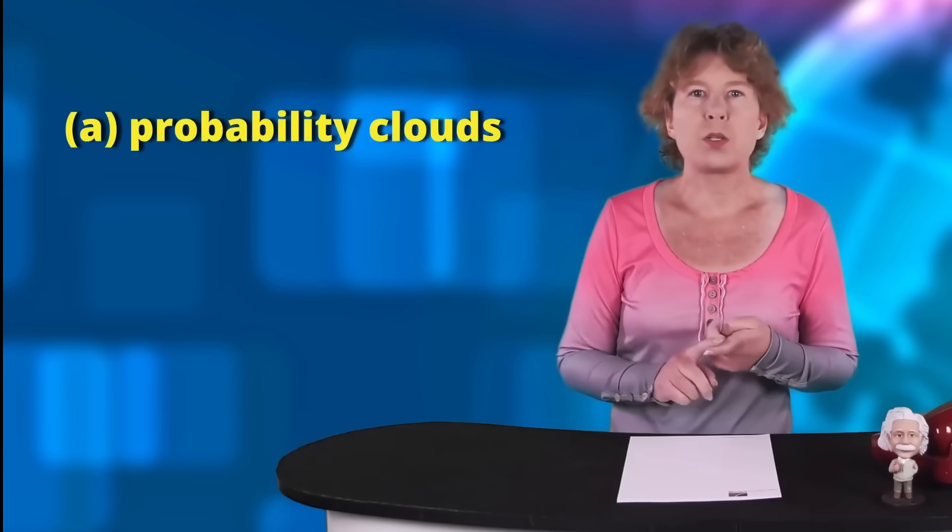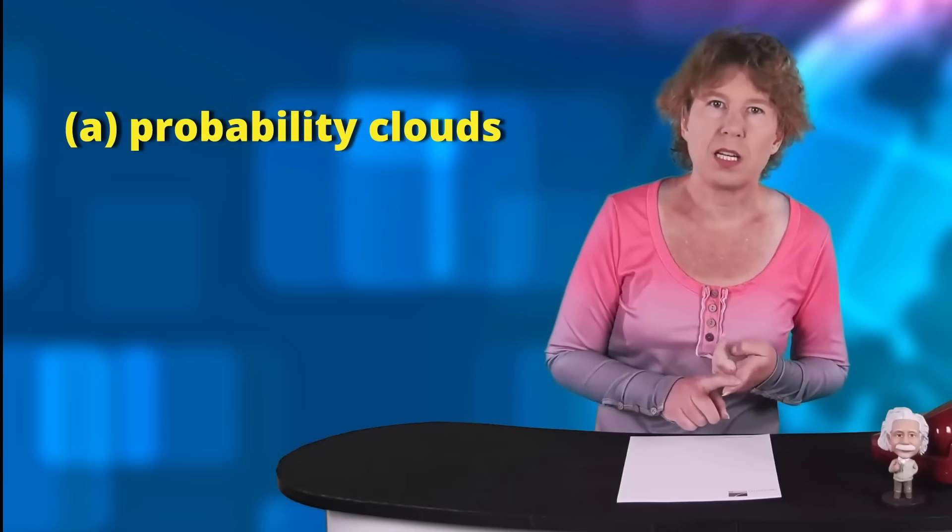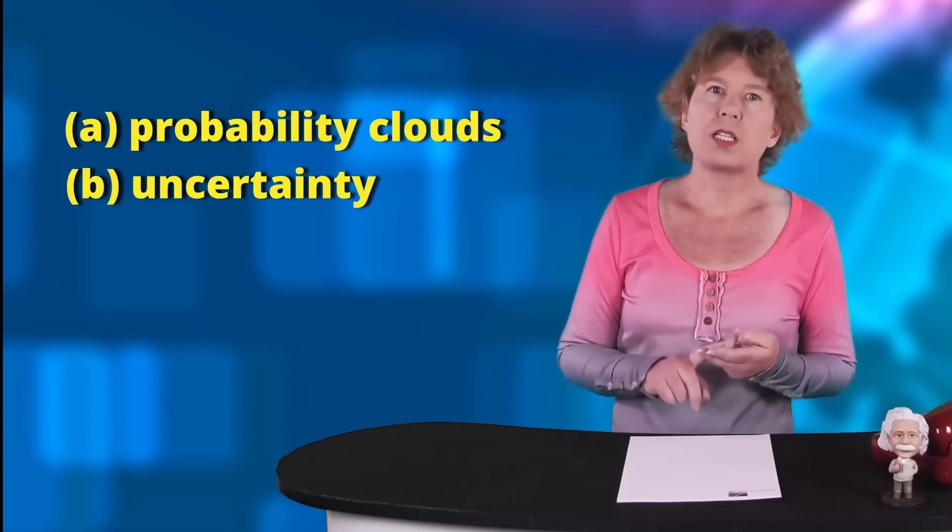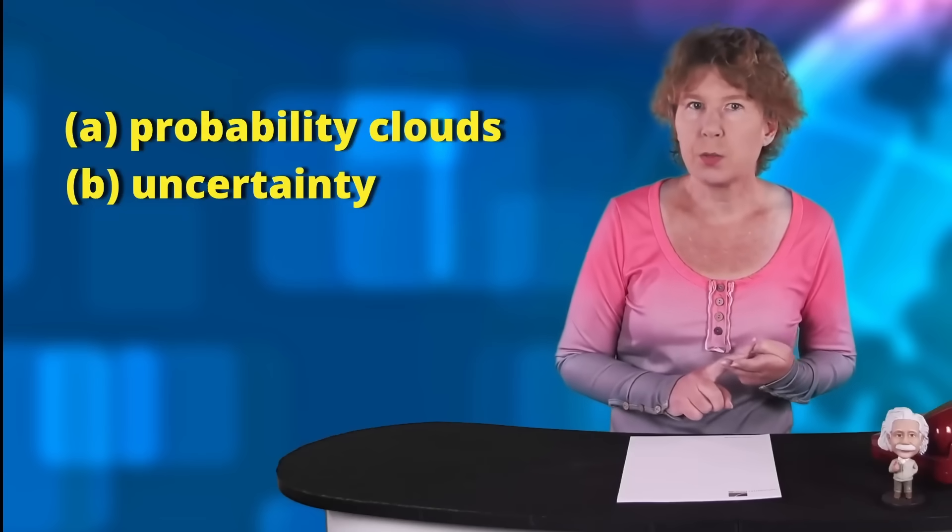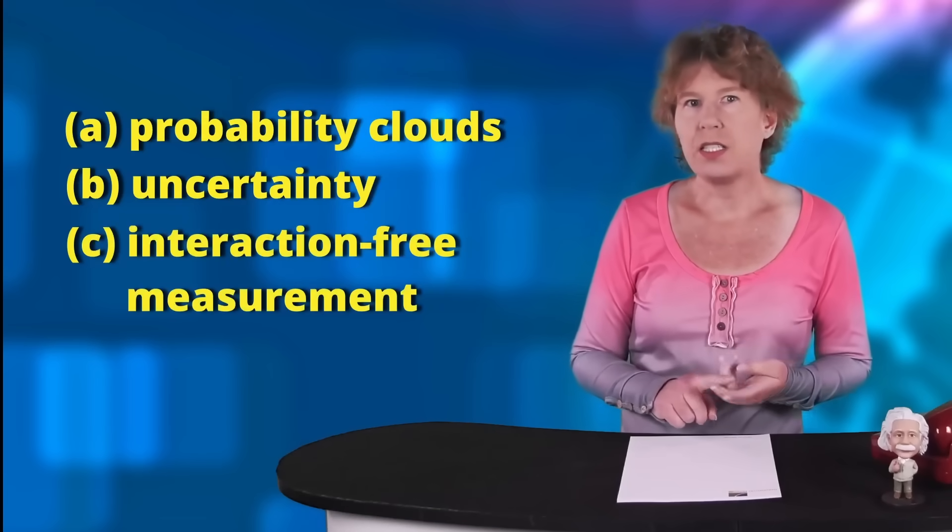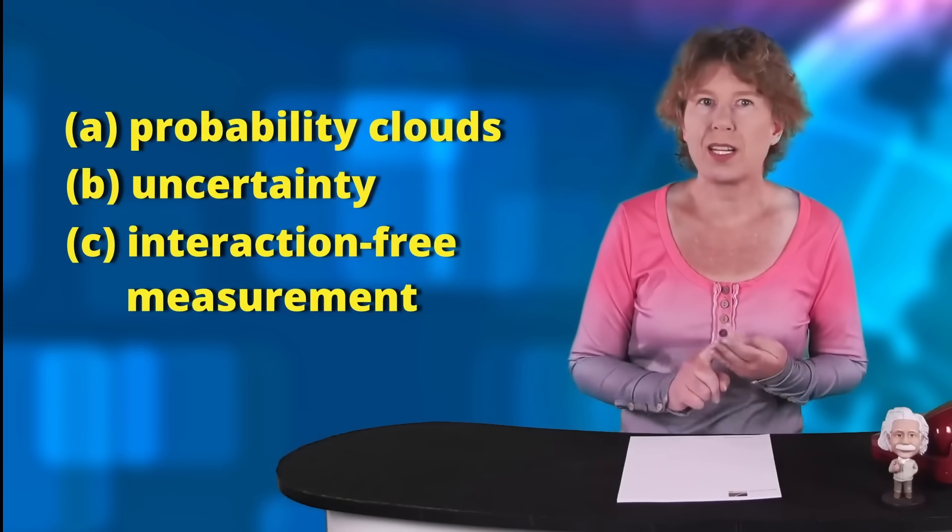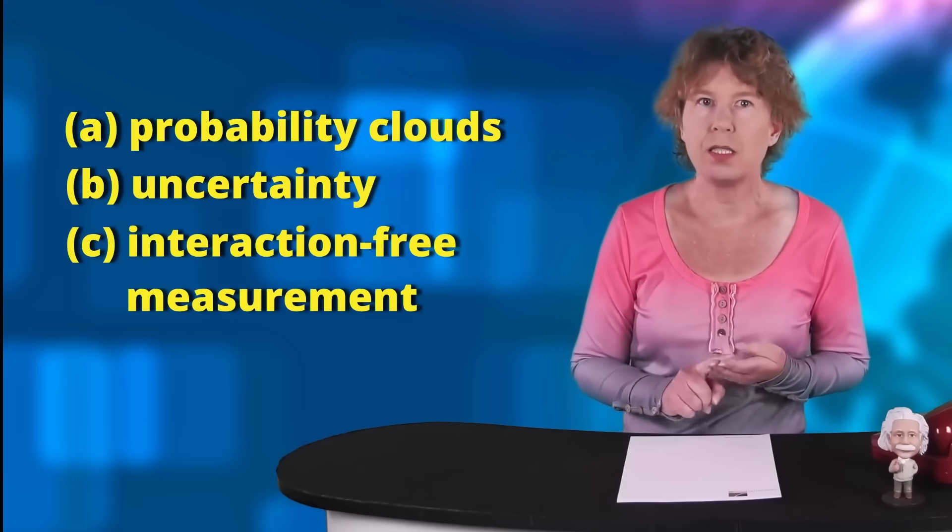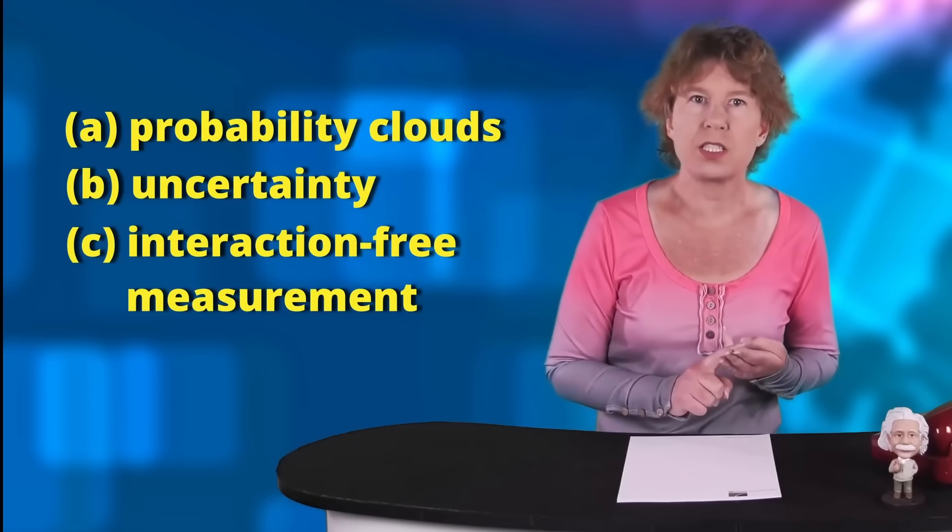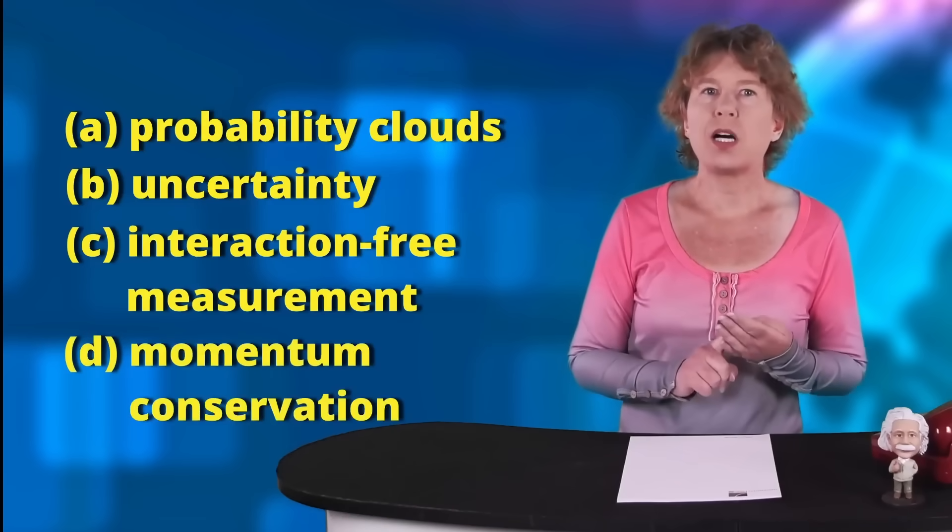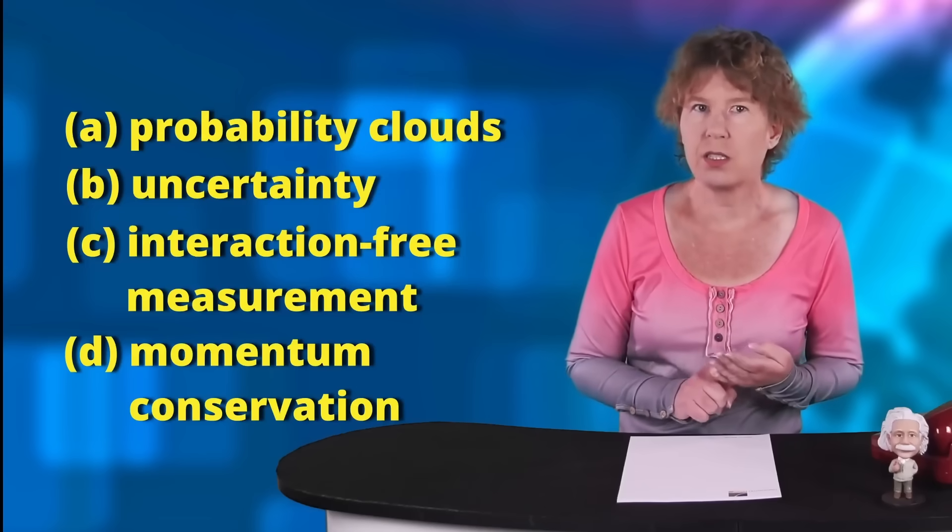So we have A, quantum particles are probability clouds. B, those clouds spread if you don't measure the particle. C, you can measure part of the probability clouds without interacting with the particle by excluding some regions. And D, a quantum particle can't change direction on its own.